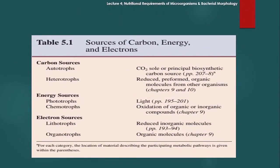اس table میں بطور summary یہ سارے types mention ہیں۔ یہ six types جو ہو گئے: carbon source کی بنیاد پر autotroph اور heterotroph، energy source کی بنیاد پر phototroph اور chemotroph، electron source کی بنیاد پر دو types۔ Table میں ان کا carbon source، electron source، اور representative microorganisms mention کیے ہیں۔ آپ اس table سے بآسانی سمجھ سکتے ہیں۔